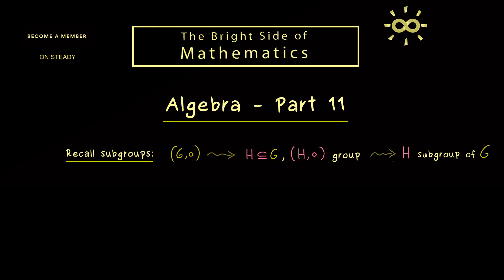Hence, it might be useful to introduce a short notation for this. In the case that H is a subgroup of G, one often writes that H is less or equal than G. So in our context here, this simply means that H is a subgroup of the group G.